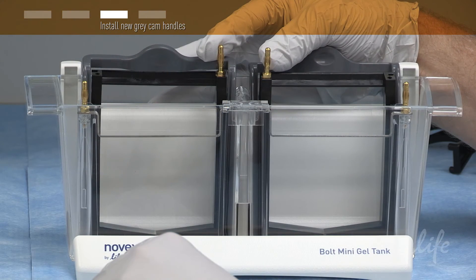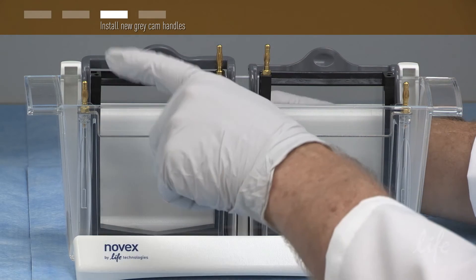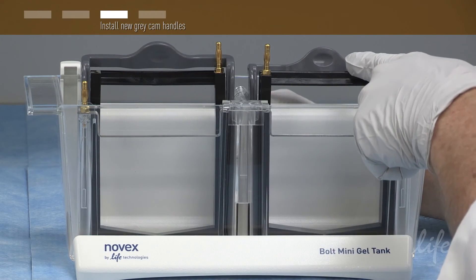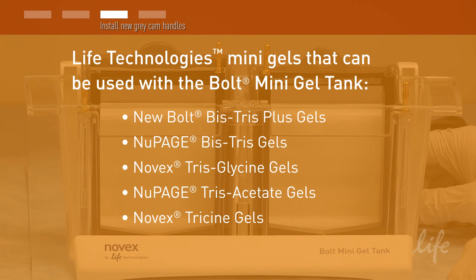Check to make sure that the anode connectors are positioned in the middle. The smooth indented surfaces of the cam handles should be facing forward. The tank is now ready to use with 10 cm Life Technologies mini gels.